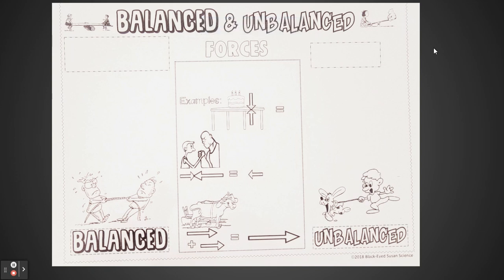We're continuing on with balanced and unbalanced forces. Force is going to be something as simple as a push or pull of an object. There are two types of forces coming from changes of energy — potential and kinetic energy. For example, gravitational energy, like thinking about a roller coaster or an apple on a tree. Once that apple falls and starts moving to the ground, it transforms from gravitational potential energy over to mechanical kinetic energy.